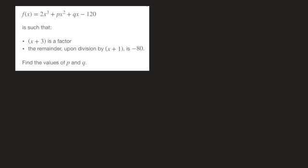Since we need to find two unknowns p and q, we're going to need to derive two equations. For each of those two equations we'll use one of the two bits of information we're given. So let's look at this first bit of information — the fact that x plus 3 is a factor.